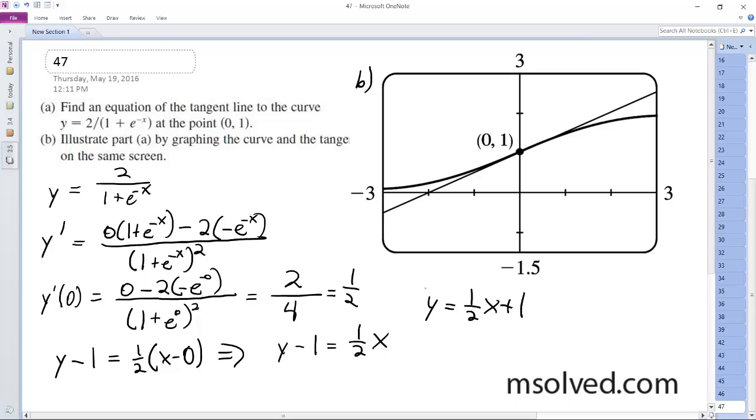I already did part b here, so here's our equation for the tangent line. Part b: 1 half x means it goes over 2 for every 1 it goes up, rise over run 1 over 2. You can see the y intercept is 1, so this matches up.